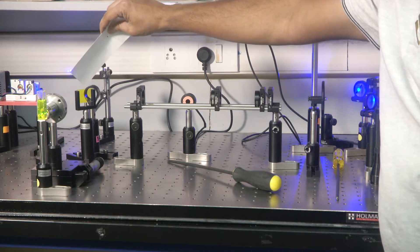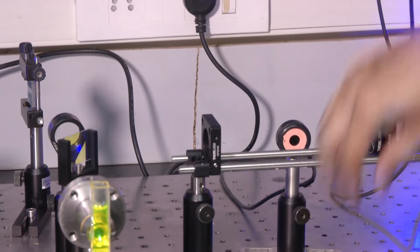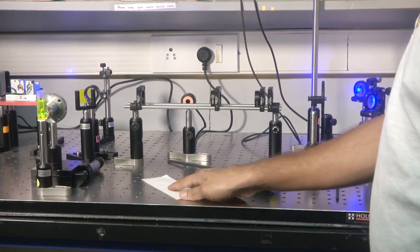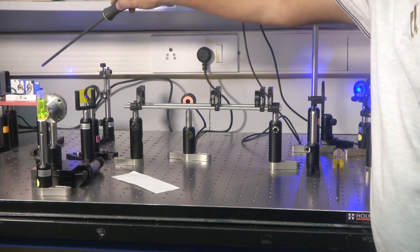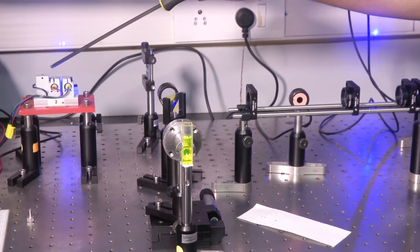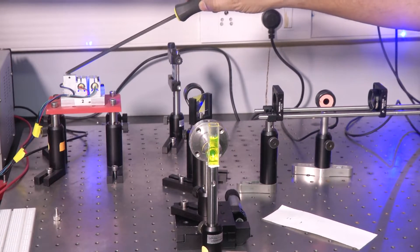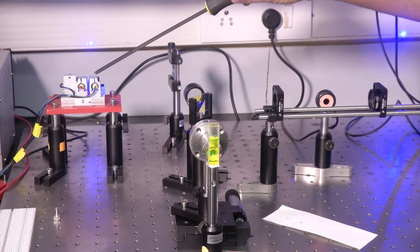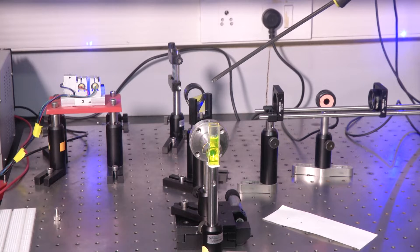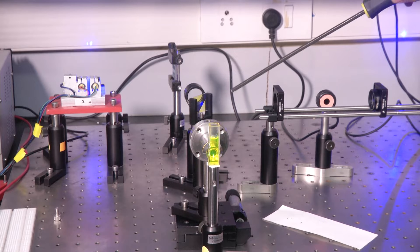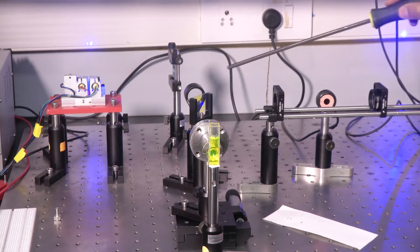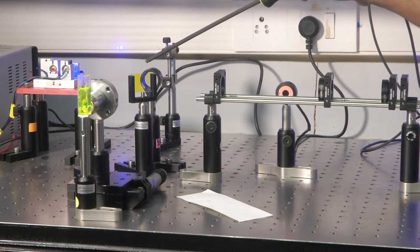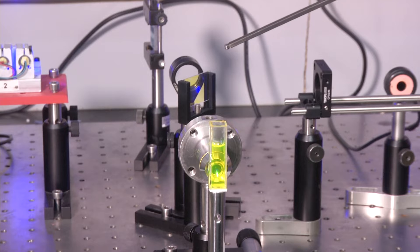This new optical element is a dichroic mirror. We have seen it in the class. It has a special property. These mirrors have a special property of transmitting certain colors while reflecting others. Now I have here used a dichroic which is going to reflect the blue laser, that 470 nanometer laser, and that laser light can be focused using a lens. It is going to reflect the blue laser and transmit the red-shifted, the Stoke-shifted green fluorescence.